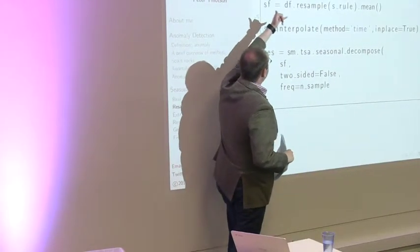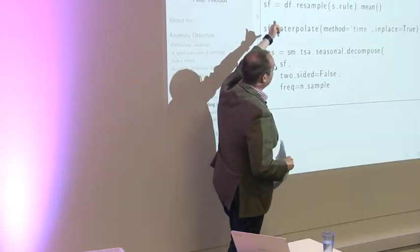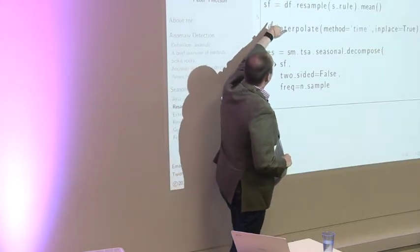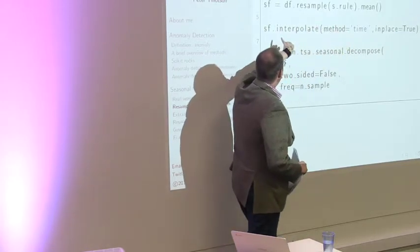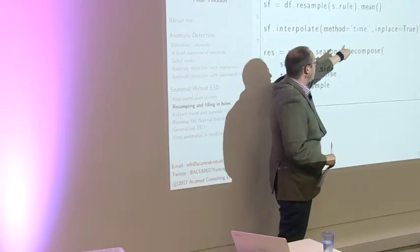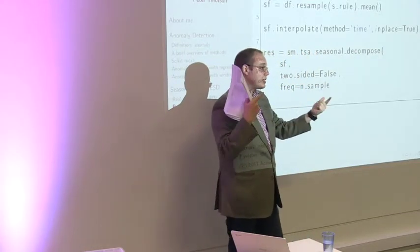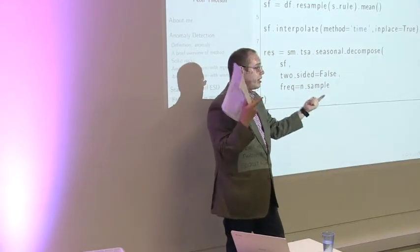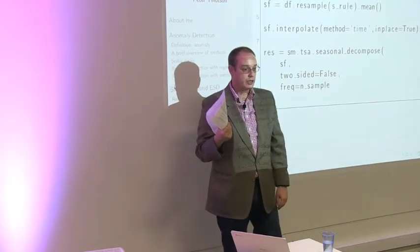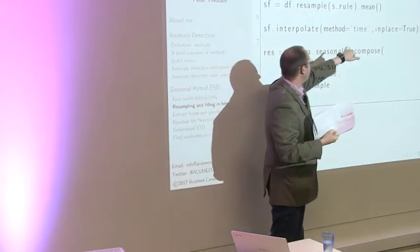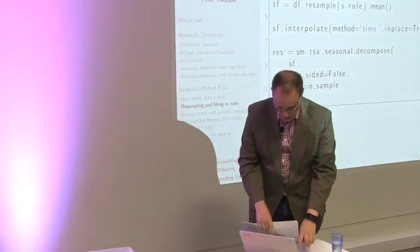I chose 15-minute intervals — there are 96 fifteen-minute periods in 24 hours. I resampled at 15 minutes and then interpolated. Based on time, this method chooses the two adjacent points and fills the gap with the mean of those two points — direct linear interpolation.